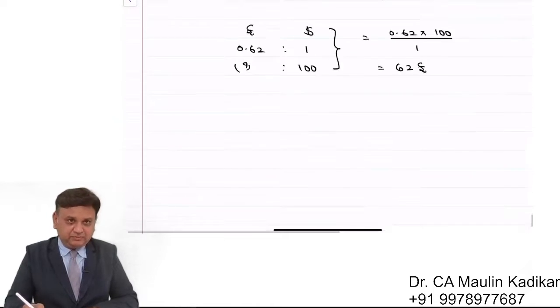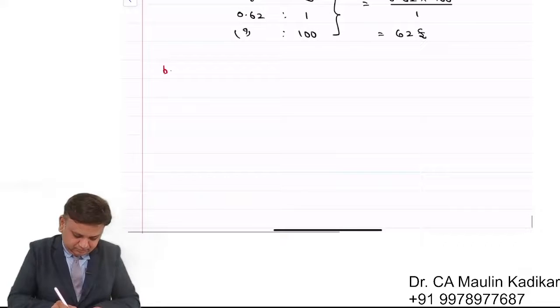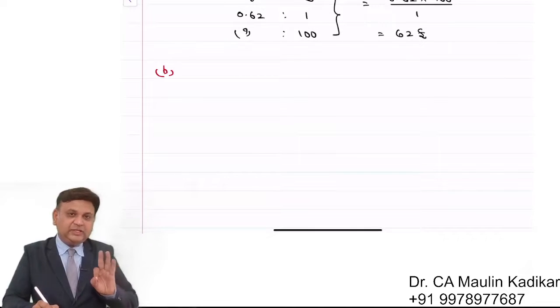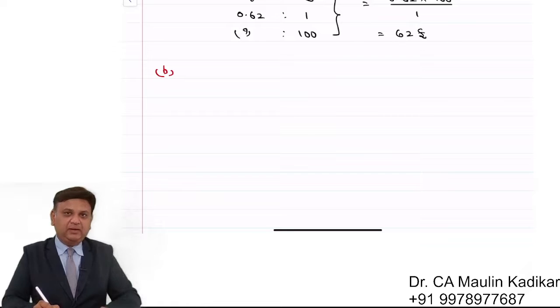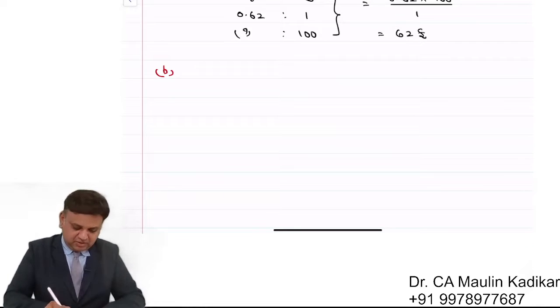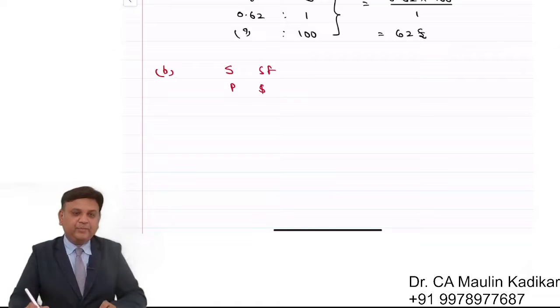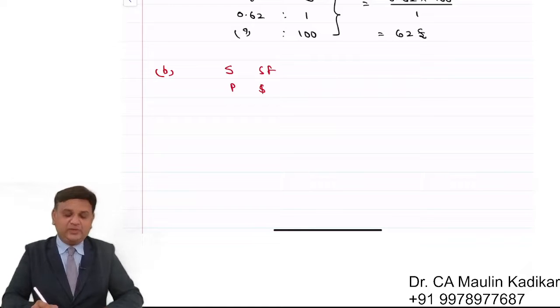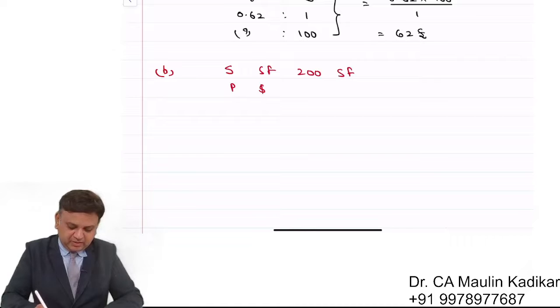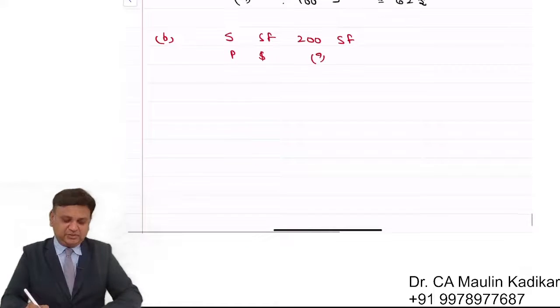So part B of the question: Dollar that 200 Swiss Francs can buy. It means that the transaction is conversion of Swiss Franc into dollar. Dollar that 200 Swiss Francs can buy. We have 200 Swiss Francs, how much dollar will we get? That is the question.